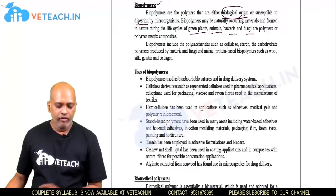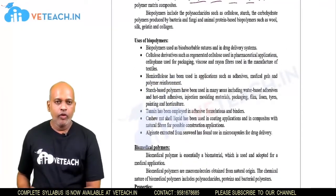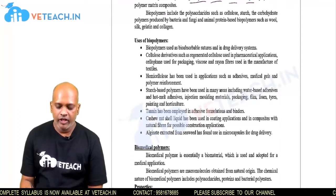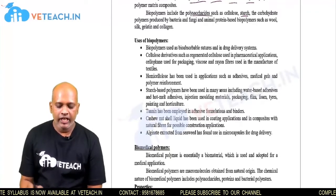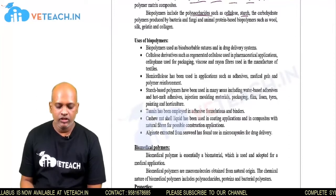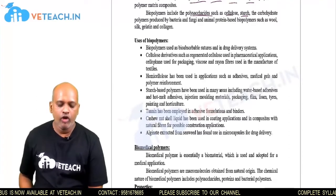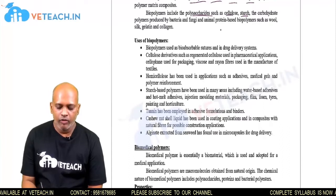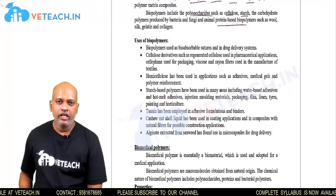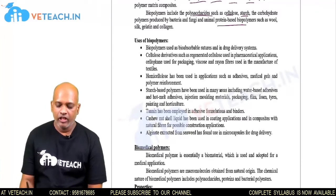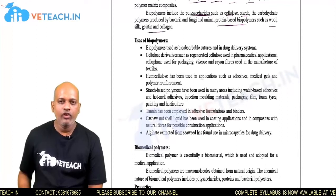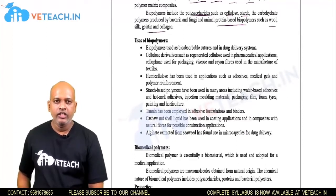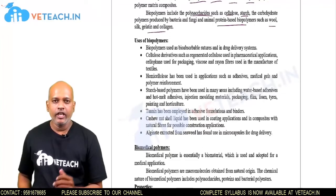Biopolymers are mainly obtained from starch materials, polysaccharides, cellulose, or carbohydrate polymers from plants or fungi. Animal protein-based biopolymers are also known — they are silk, wool, gelatin, and collagen. These are the main examples of biopolymers, obtained from either plant or animal origin.